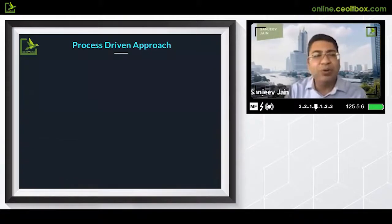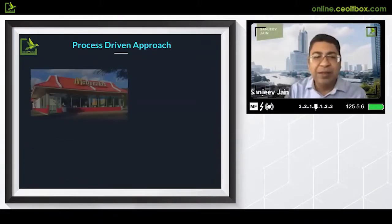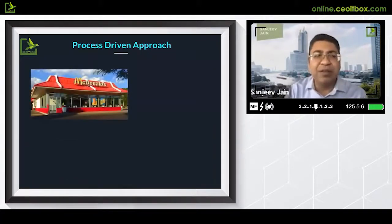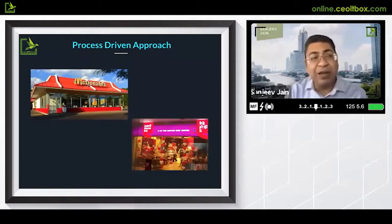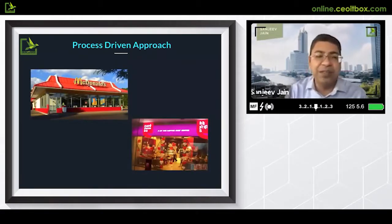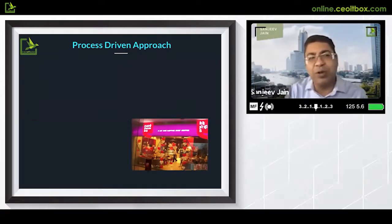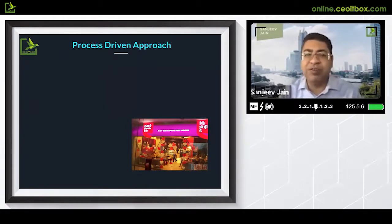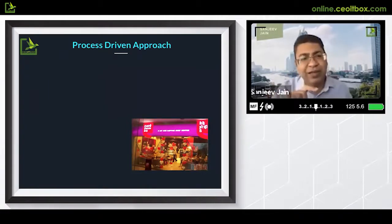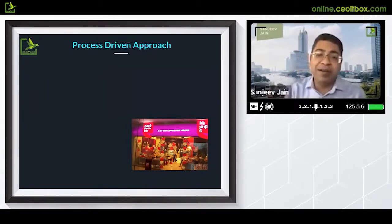Companies like McDonald's with 37,000-plus branches and Coffee Cavity with 1,700-plus branches became big because everything they do follows a process. Every process is very finely tuned, process-oriented, and it's all documented in writing.